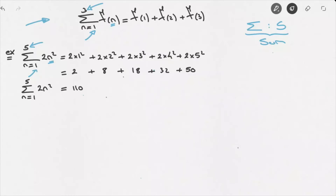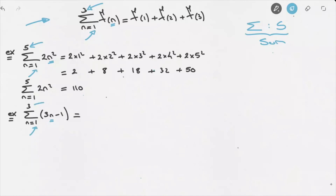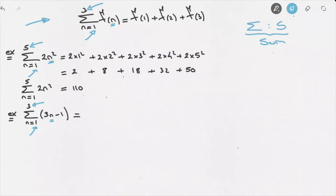Now let's look at another example. Let's say we were asked to calculate the value of the following sum: the sum from n equals 1 to 3 of the expression 3n minus 1. In this case, all we need to do to calculate the value of this sum is replace n inside this expression by all the integers between the initial value and the final value, and add all of those values together.